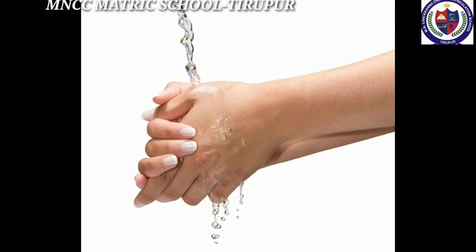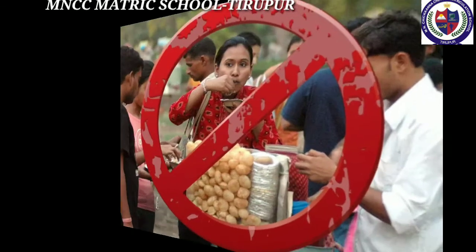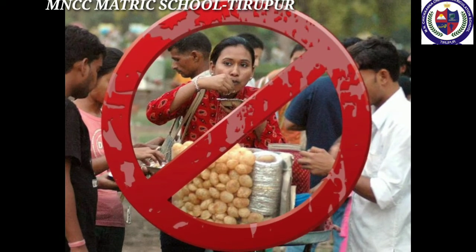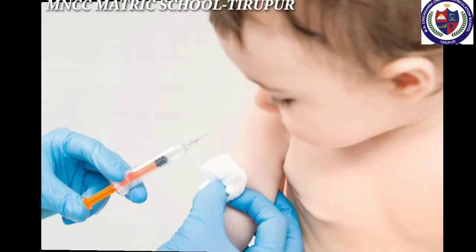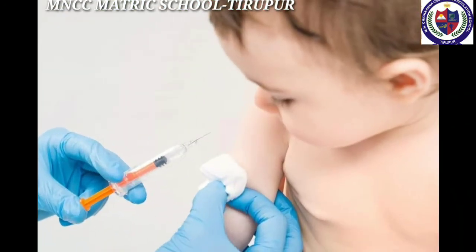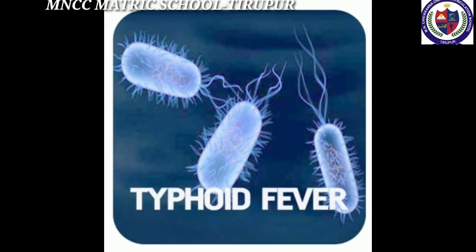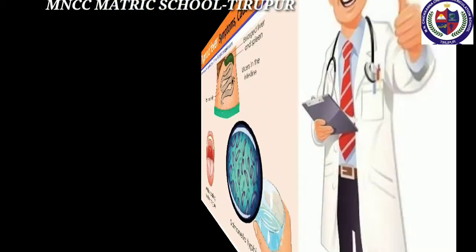The symptoms of cholera are vomiting, severe diarrhea, and cramps in legs. Prevention and treatment for cholera: good hygienic practices like washing hands before eating, avoid eating uncovered food from street vendors, drinking boiled water, and getting vaccination against cholera.